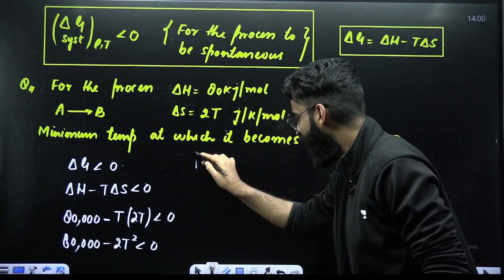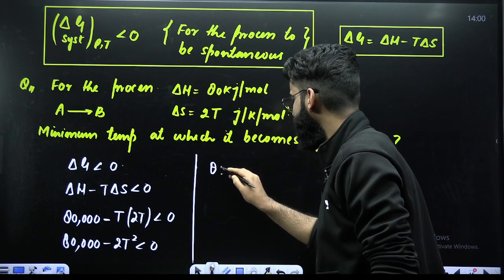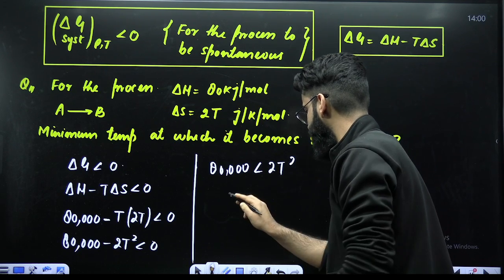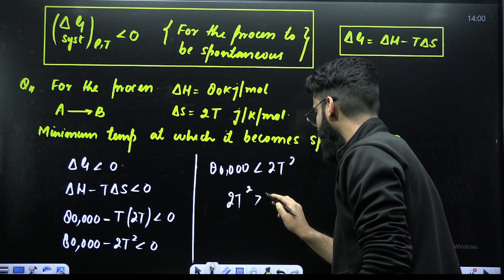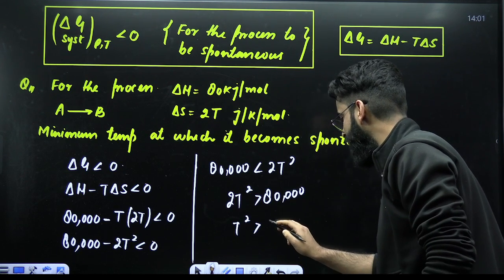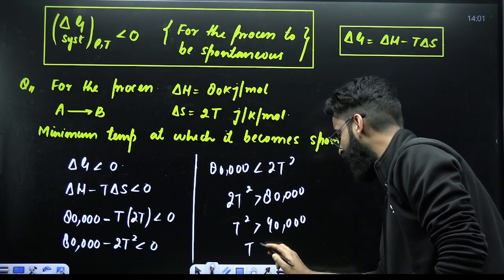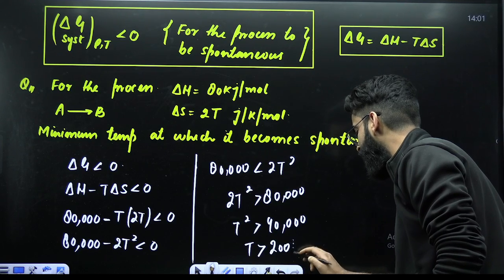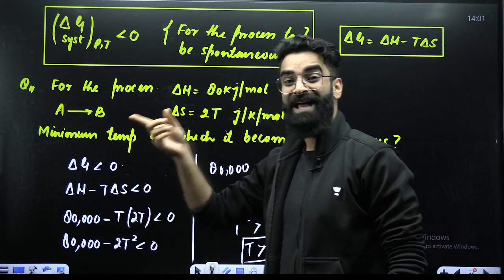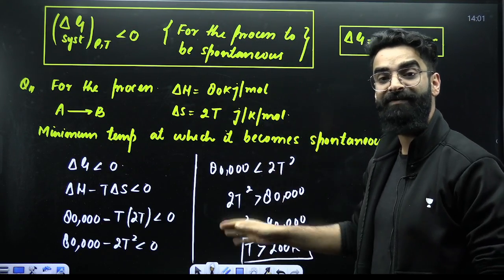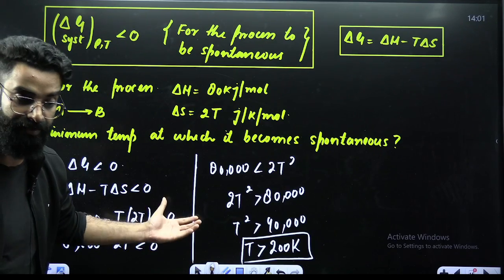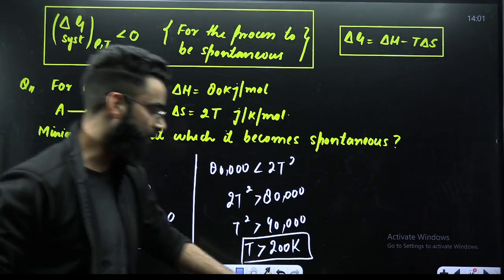Doing the calculation: 2T² > 80,000, so T² > 40,000, which means T > 200 K. So the temperature of this reaction has to be greater than 200 Kelvin for the process to be spontaneous. This is the procedure for solving this type of question.